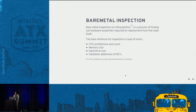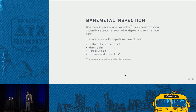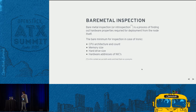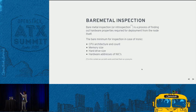Bare metal inspection, or introspection — we can't agree on which word to use — what is it? We have a bare metal machine that has a lot of properties. Unlike a VM which you mostly control — how many CPUs, how much memory — a bare metal machine has hardcoded properties. Some of these we actually have to know: CPU architecture, number of CPUs, memory size, hard disk size, and MAC addresses of network cards. We have to put all this information in the Ironic database.